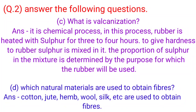D. Which natural materials are used to obtain fibers? Answer. Cotton, jute, hemp, wool, silk, etc. are used to obtain fibers.